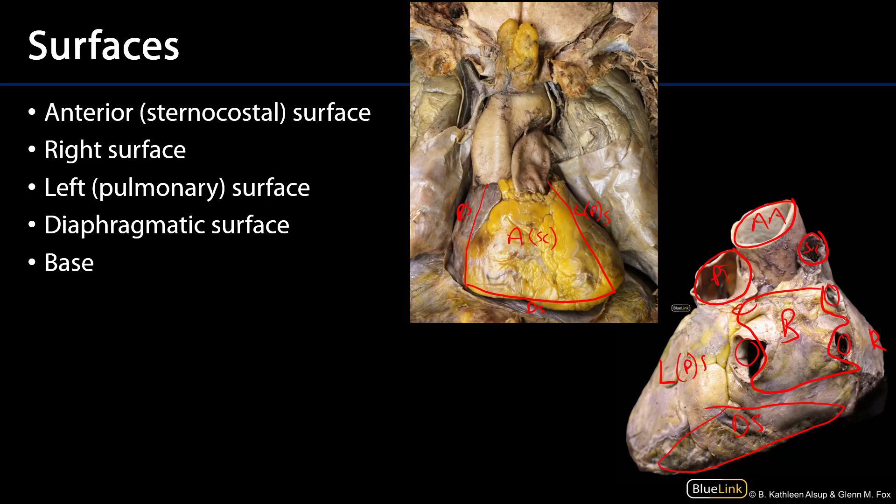So we've discussed the most superficial of layers and a little bit about orientation of the heart. We've also seen the various sulci and borders and surfaces of the heart. Thank you very much for your time.